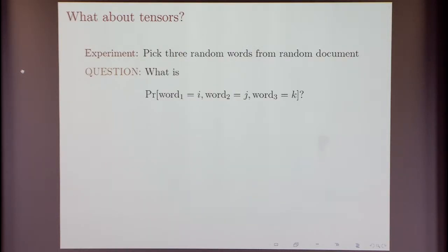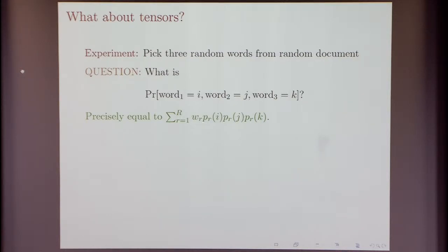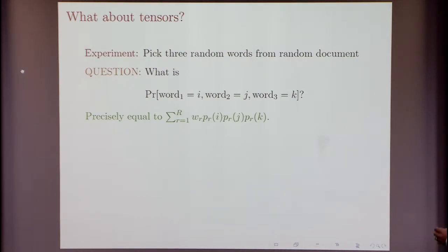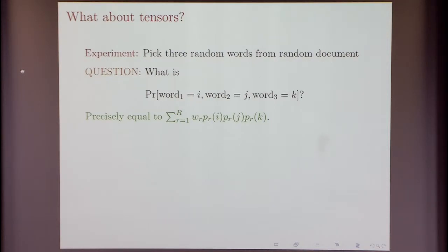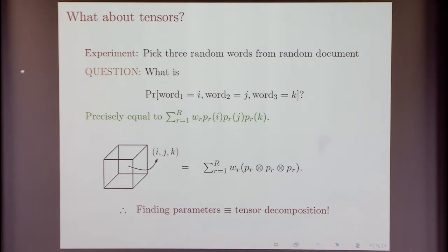So what does this have to do with tensors? As we saw in the previous talks, the simplest way tensors show up is to ask: if I pick three random words from a random document, what is the probability that the first word is i, the second is j, and the third is k? The calculation shows this equals the sum over topics R of W_R times P_R(i) times P_R(j) times P_R(k). If you form a tensor whose (i,j,k)-th entry is precisely this quantity, you can write it as a sum over R of W_R times the outer product of P_R. This illustrates why finding parameters is essentially the same as tensor decomposition.